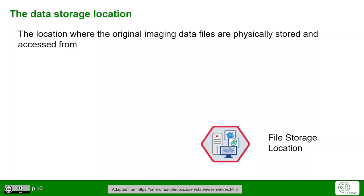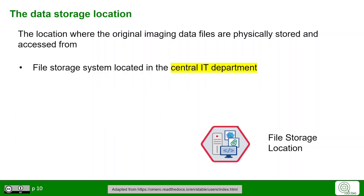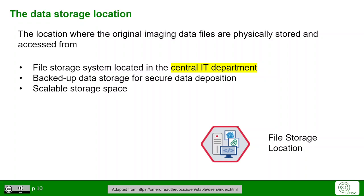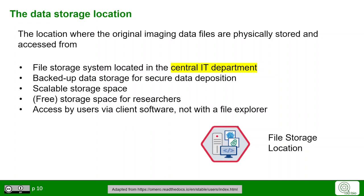The actual file storage is attached to the OMERO Server. This is where the uploaded original imaging files are physically stored and from where they can be accessed. This file storage is typically located in the central IT department, providing a backed-up storage for secure data deposition. Storage can be scaled up by attaching more storage as needed, and depending on your institute, it may be free or come with a cost. Users access this storage via the client software but cannot directly access the file explorer, so data cannot be accidentally corrupted. Note that the original raw data is never changed — all changes in OMERO are stored in the PostgreSQL database in relation to the original files.